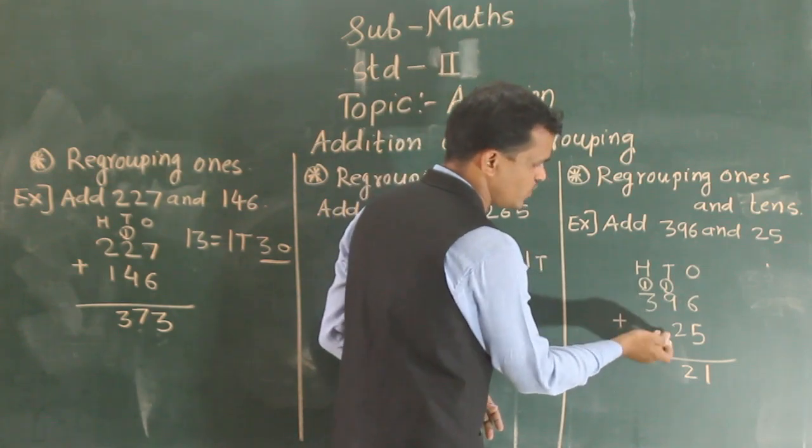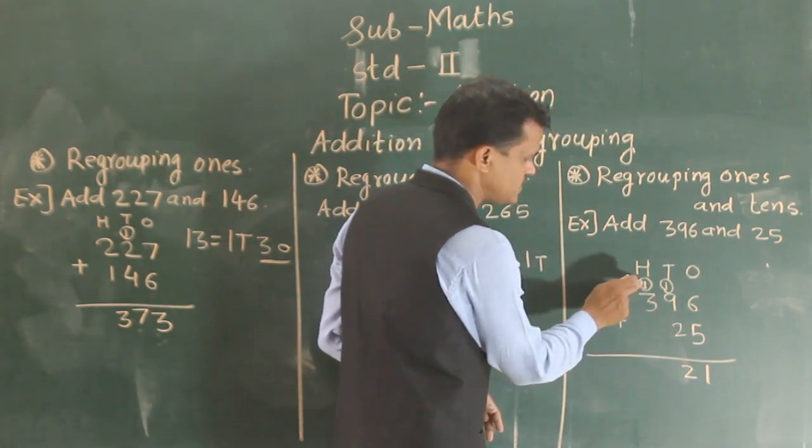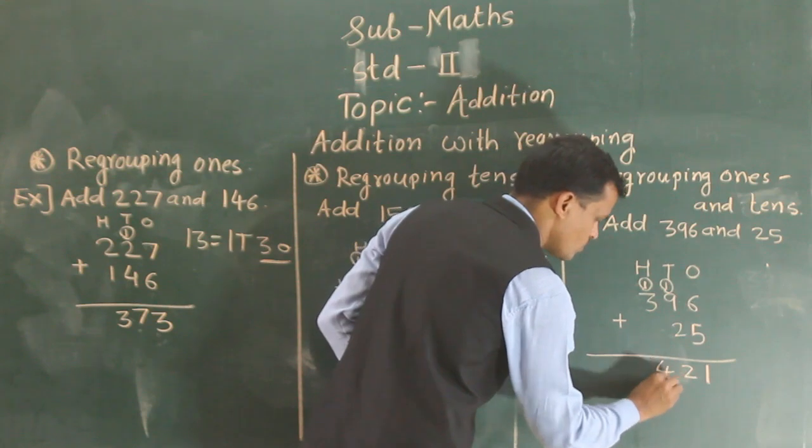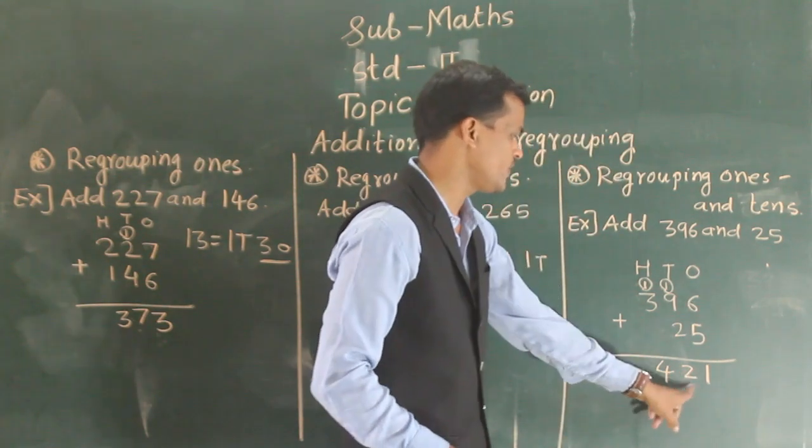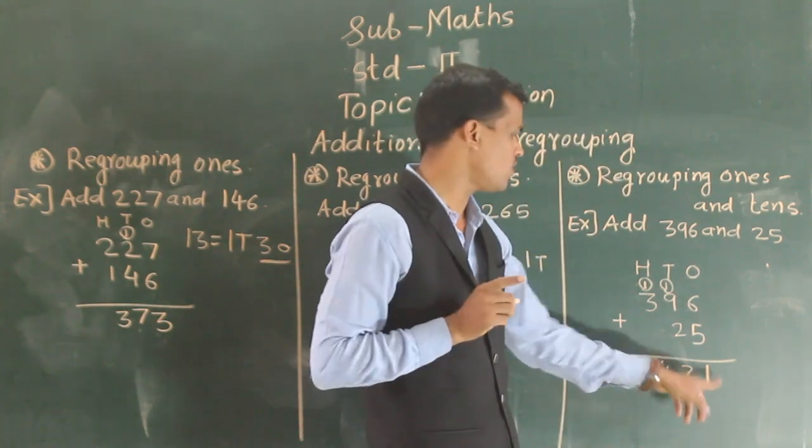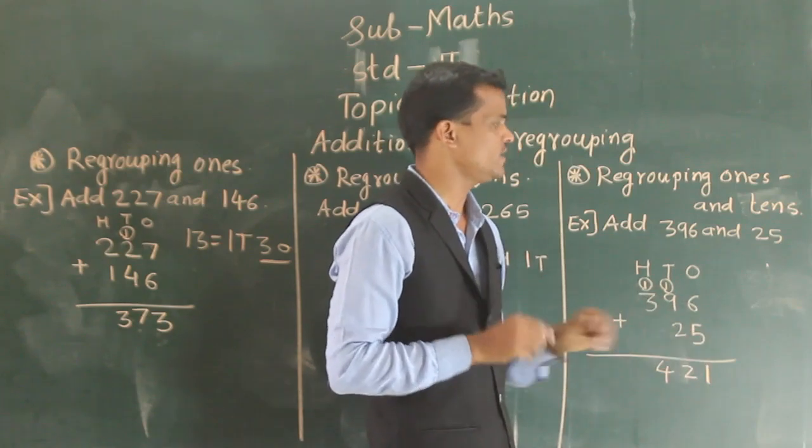Then here 3, there is no number, 3, so 3 plus 1, 4. So 421 is the sum of 396 and 25.